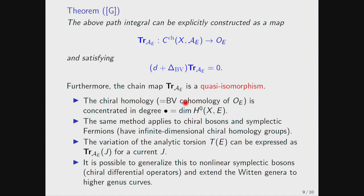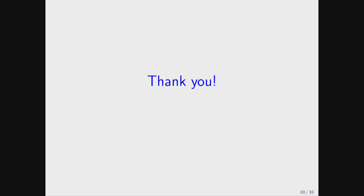From this computation, Cairo homology can be computed as BV homology of this finitely generated BV algebra, concentrated in a special degree. Wherever the holomorphic vector bundle admits a non-trivial holomorphic section, we only have non-trivial higher Cairo homology in non-zero degree. The same method applies to Cairo bosons and symplectic bosons; symplectic fermions have infinite-dimensional Cairo homology groups. Also, variation of analytic torsion can be expressed as trace maps of some current insertion. It is also possible to generalize this formulation to non-linear symplectic bosons, such as Cairo differential operators, and extend the Witten genus to high genus curves. Thank you.